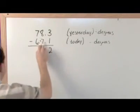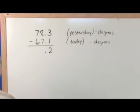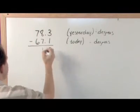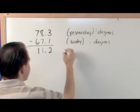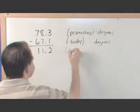So let's move on to this column. 8 minus 7, I think you can all convince yourself is 1. 8 minus 7 is 1, and 7 minus 6, I think you can all convince yourself is 1. So you see, the answer is 11.2 degrees.